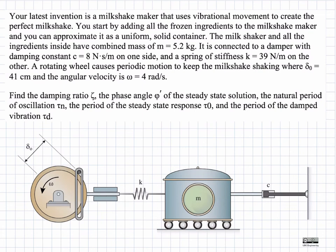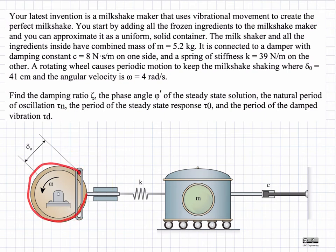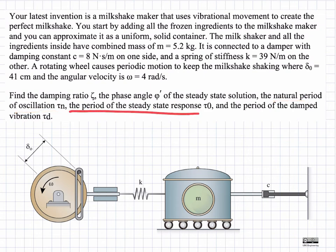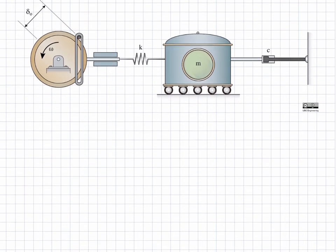In this problem, we have a mass-spring-damper system with the respective mass, damping constant, and stiffness. We're forcing it with this mechanism over here, which has an omega of four radians per second — that's our forcing frequency. We're asked to find the damping ratio, the phase angle of the steady-state solution, the natural period of oscillation, the period of the steady-state response, and the period of the damped vibration tau_d. This is a simple mass-spring-damper system, so we can use the equations provided in the formula sheet without having to derive them.